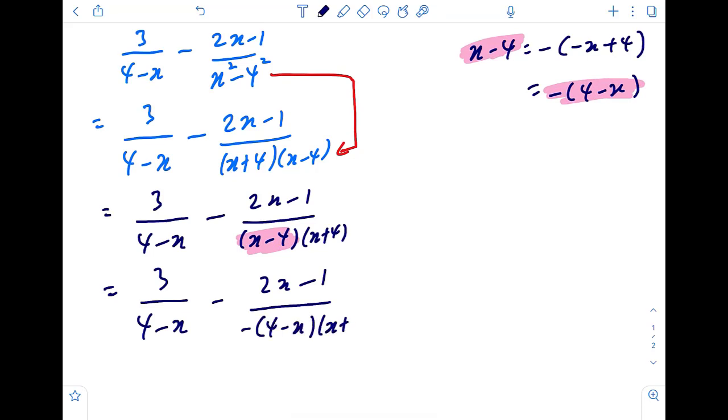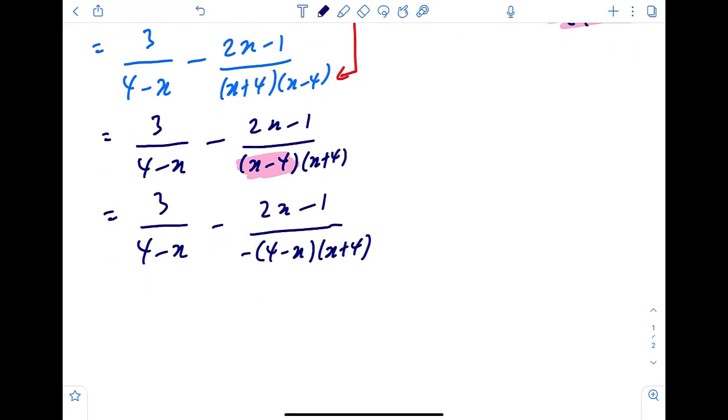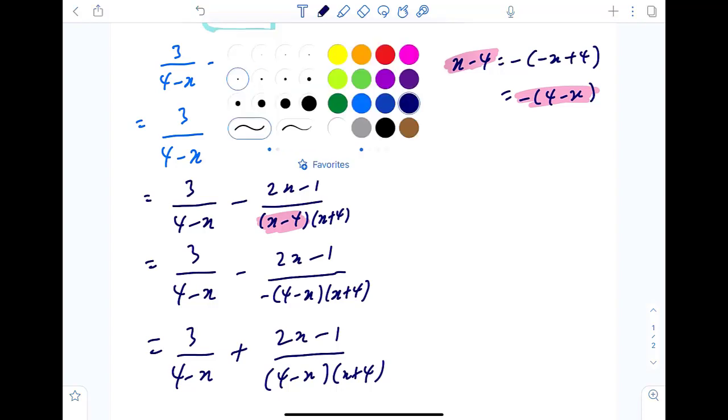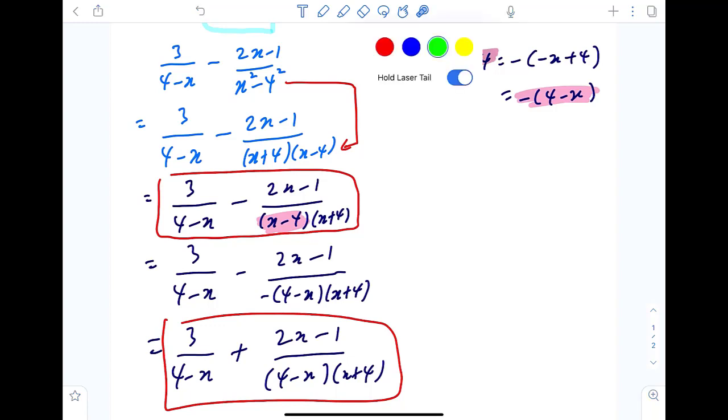Change this into negative 4 minus x, x plus 4. And now this negative and this negative combines to give you a positive. Okay, we are almost there now friends. I just wanted to mention this shortcut. Okay, now what is the shortcut?